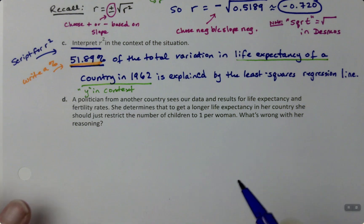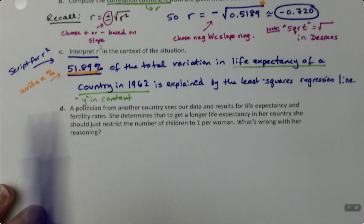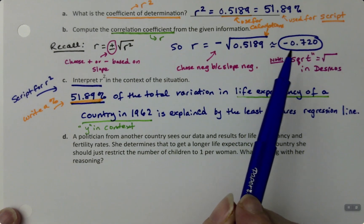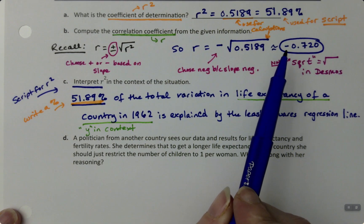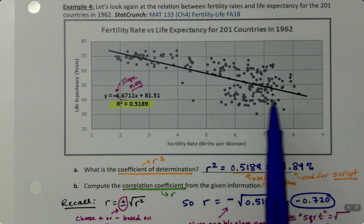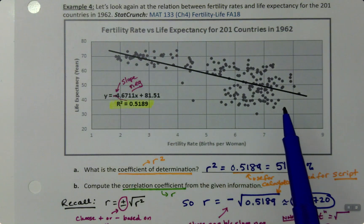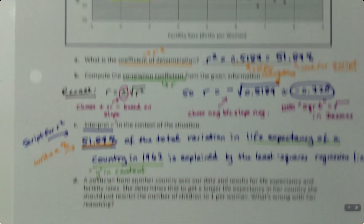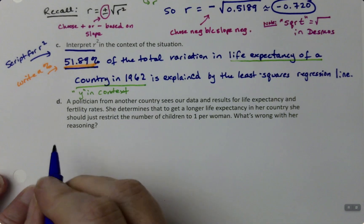What's wrong with that reasoning? And the answer is, well, correlation is not causation. We can see that this is a strong negative relationship, and it is, right? This really is real data. And a country that has a higher fertility has a lower life expectancy, at least in 1962.